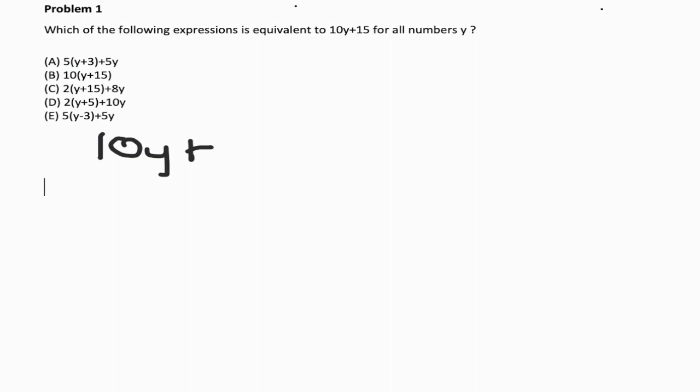10y plus 15. Okay. Well, if we want to think about what we can divide both these terms by to factor something out, let's see, what goes into both 10 and 15? That's going to be 5. So let's factor out a 5.